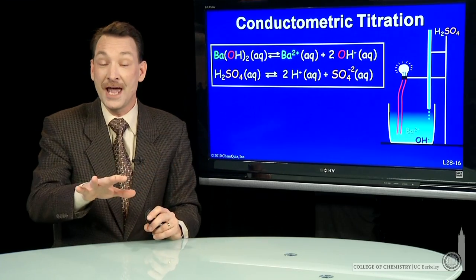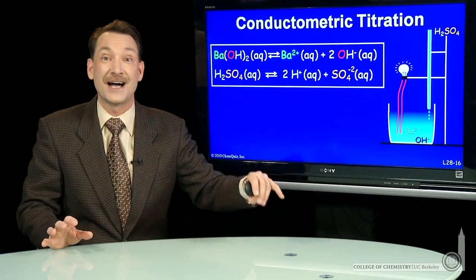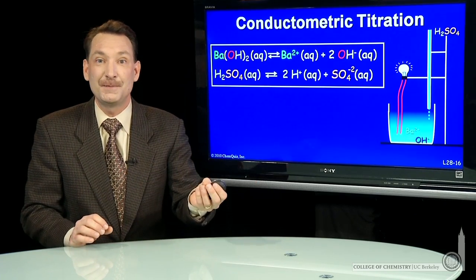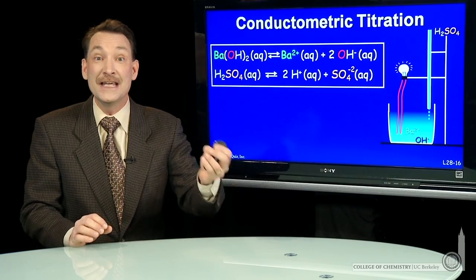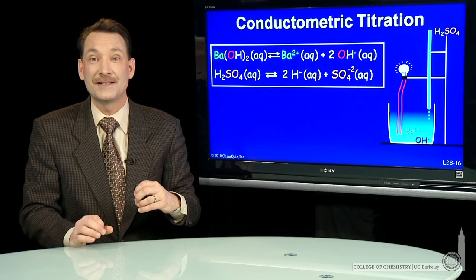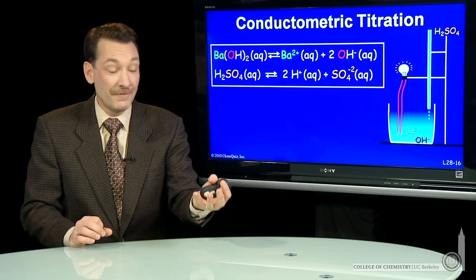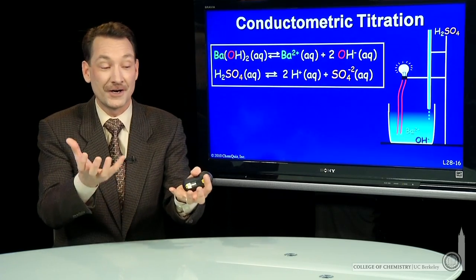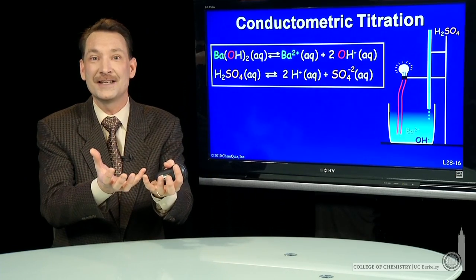So a small K means I favor the reactant side, the solid, as opposed to the ions. Now that Ksp, that solubility product equilibrium constant of 10 to the minus 10, means that whenever barium ions and sulfate ions are together in solution, the product of their concentrations has to be 10 to the minus 10.